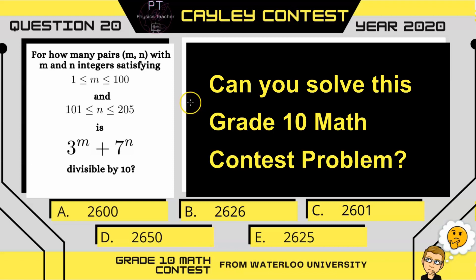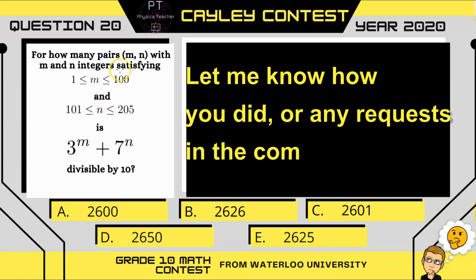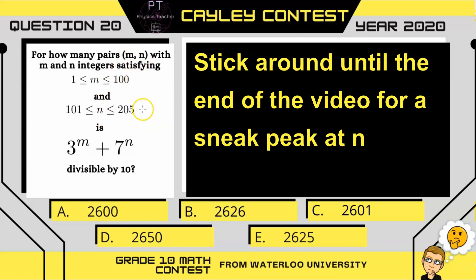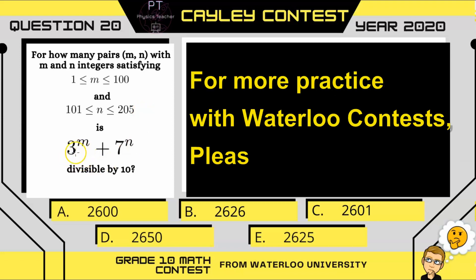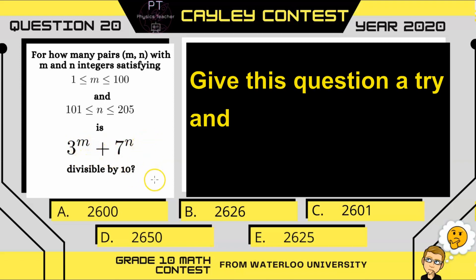This is a grade 10 math Cayley contest question, and in it we have certain integers m and n which satisfy these conditions, and we need to find how many pairs of m and n will make this expression of 3 to the m plus 7 to the n divisible by 10.